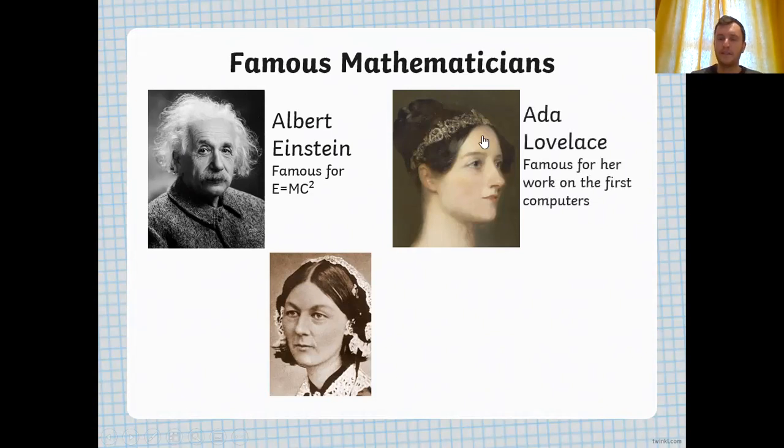Next, we have Ada Lovelace. She was famous for her work on the first computers, and you might be wondering, well, how does that link to maths? To make computers, to build computers, you have to program them, which involves some mathematics, and the computers themselves have to be able to do mathematics. So if the computers have to do maths, the person who makes them and builds them has to know that maths as well. So Ada Lovelace was famous for that.